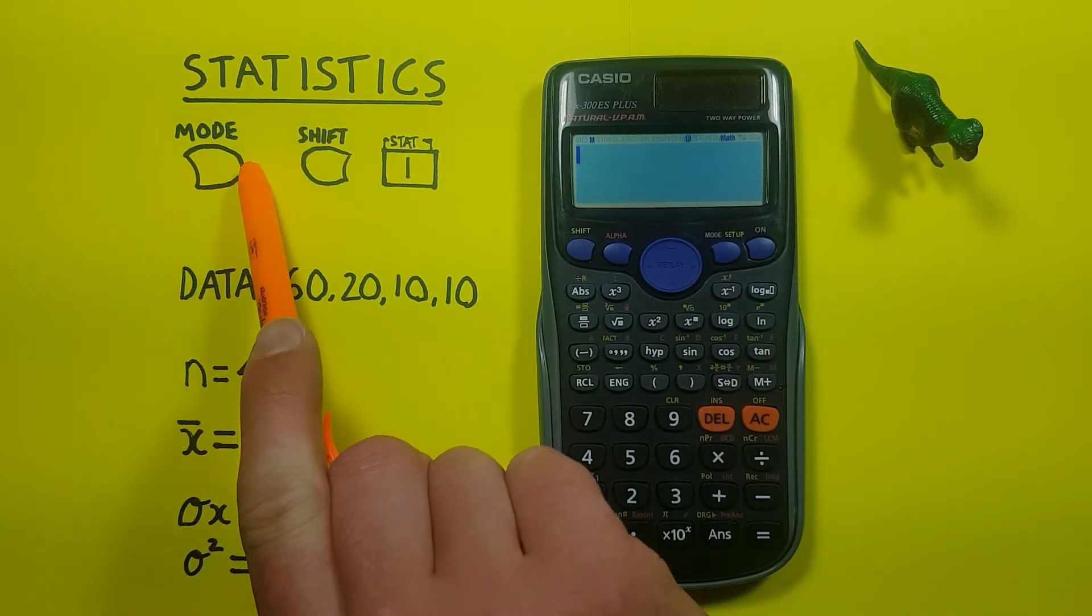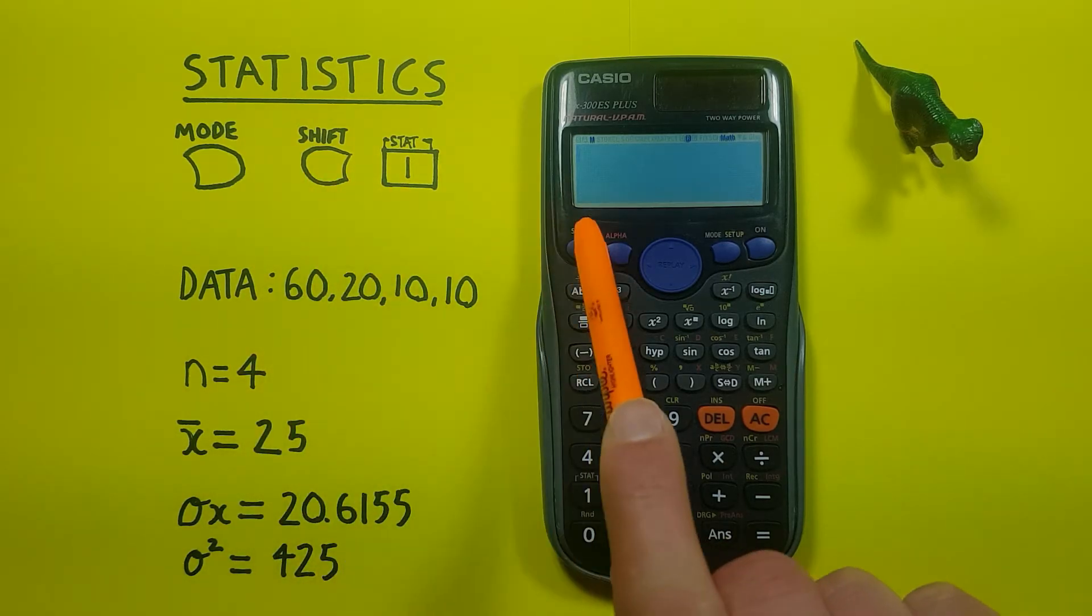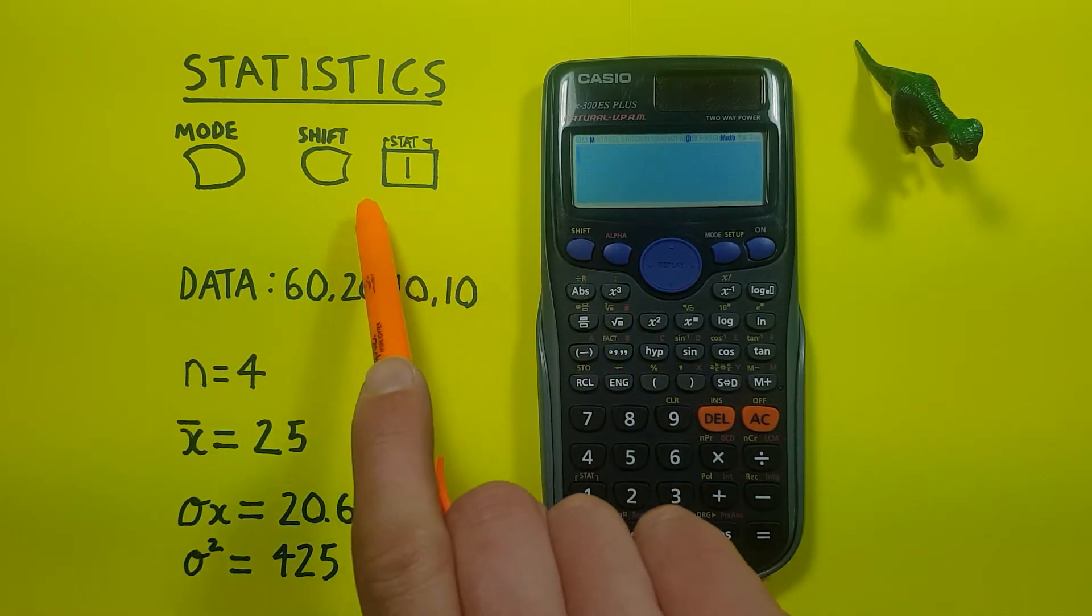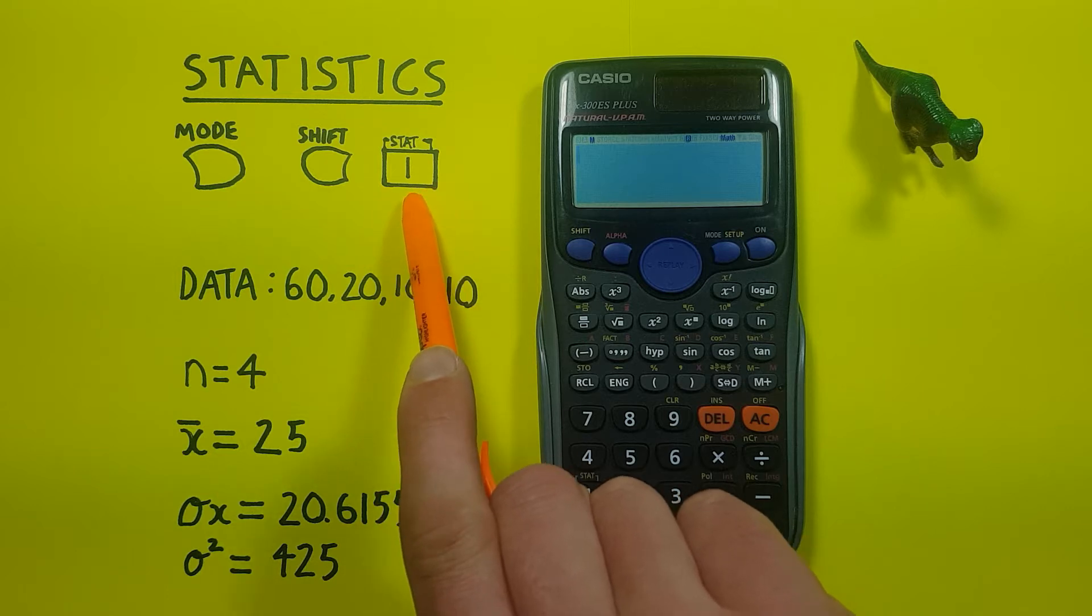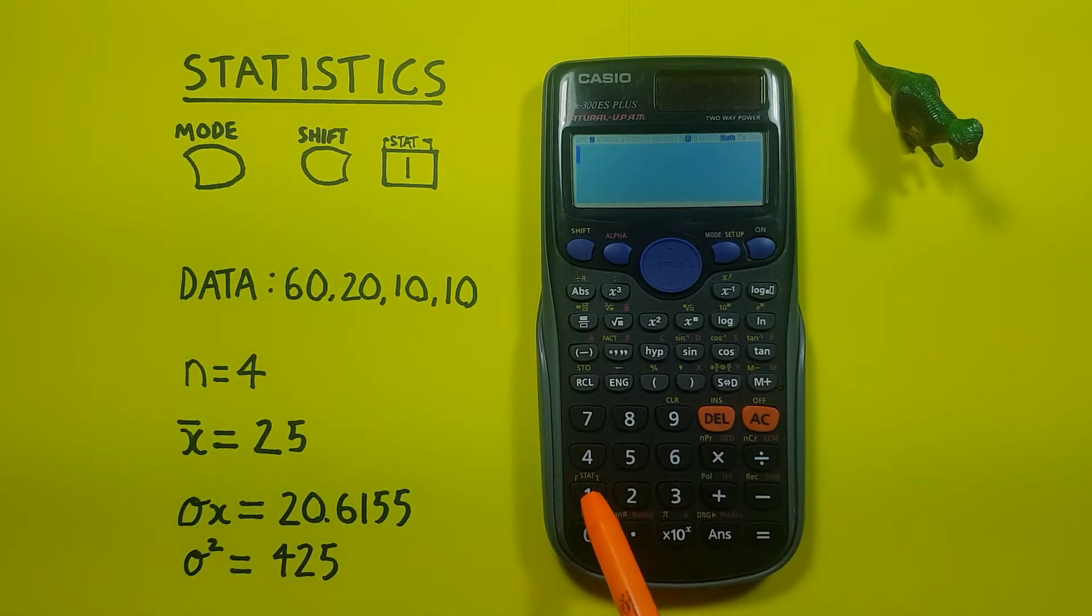The mode key looks like this, located here. The shift key looks like this, located here, and the one key with the second function or shift function of stat that looks like this, located down here.